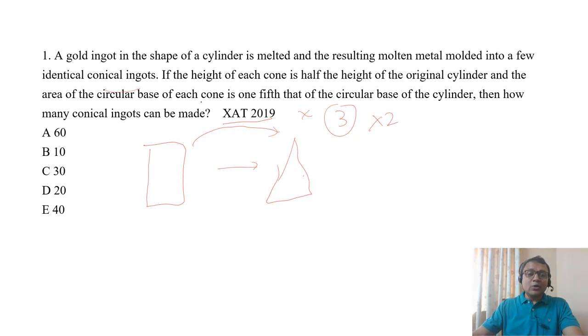The total number of cones that can be made is 30. You directly get the answer: 30. The conceptual understanding should be there. It's not that you can directly solve it, but if you understand it, you can solve it really fast.